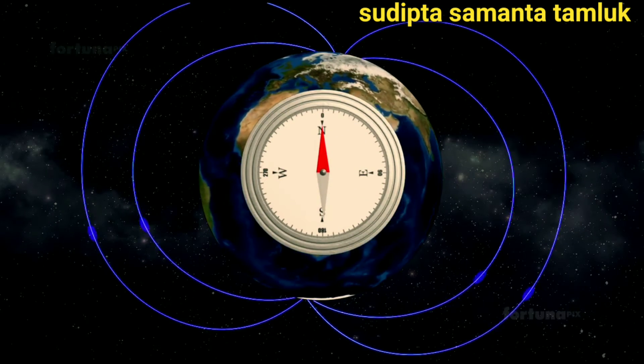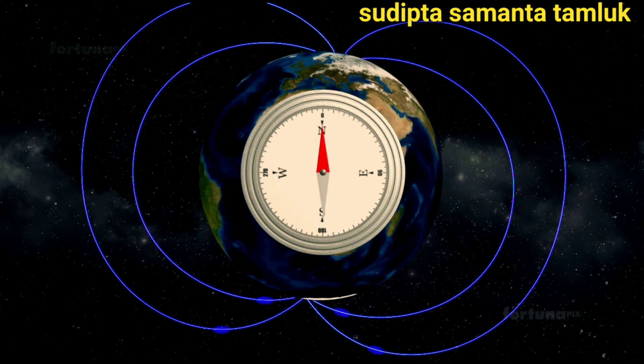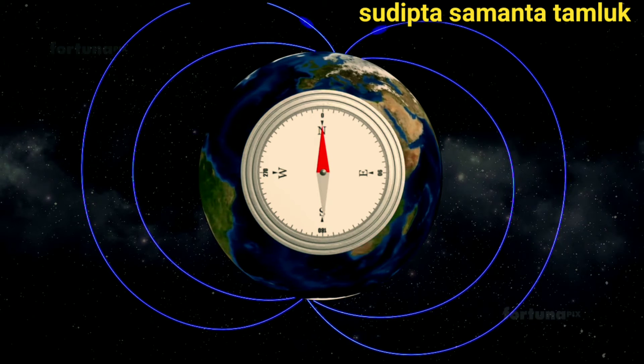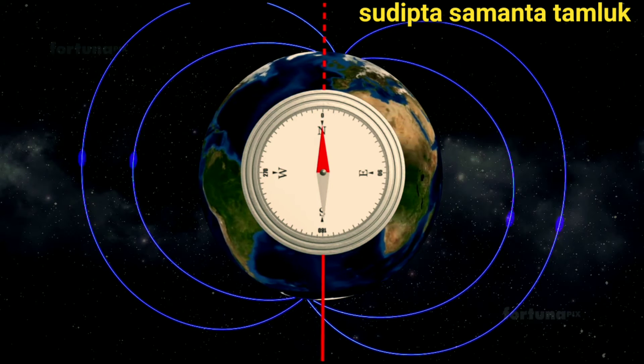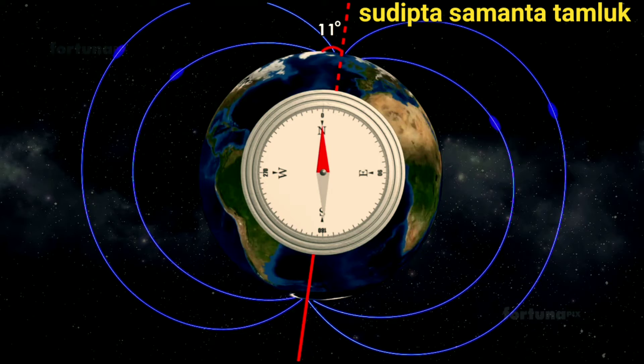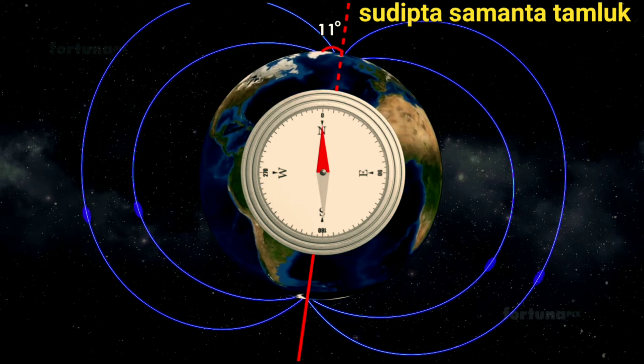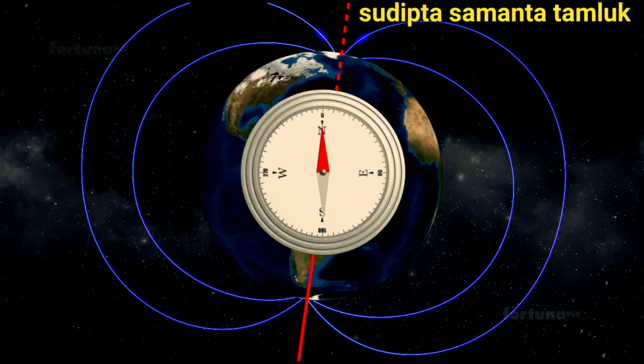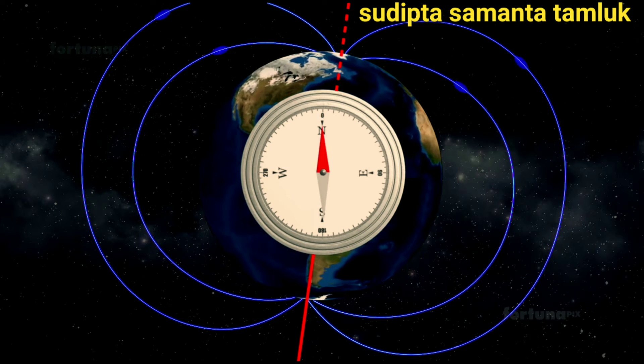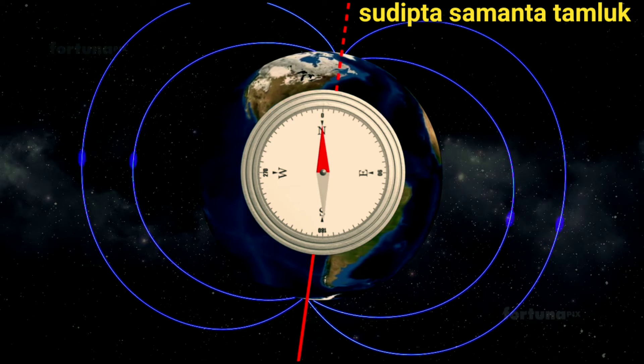On a compass, the north end of the needle will point towards Earth's north pole, meaning the south end will point towards our south pole. The Earth's magnetic field is tilted 11 degrees from the spin axis of the Earth. Because of this, a compass needle isn't pointing exactly towards the north pole, but rather just a little bit away from it.